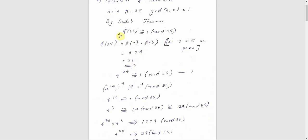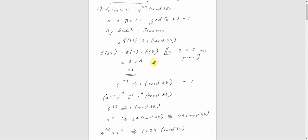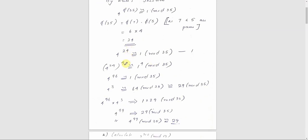So by Euler's theorem, 4 raised to 24 is congruent to 1 mod 35. Now we need to reach the power 99. We raise the equation to a higher power: 4 raised to 96 is congruent to 1 mod 35.